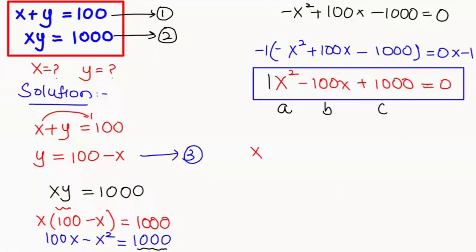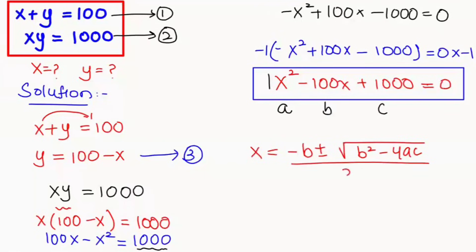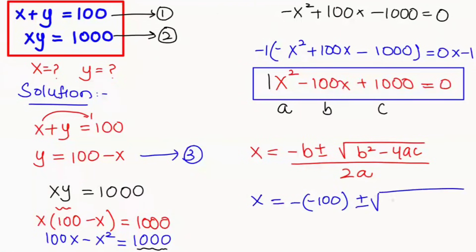x is equal to minus b plus or minus root of b squared minus 4ac, over 2a. So the b value we have here is negative 100, giving us: x equals negative of negative 100, plus or minus the square root of negative 100 to the power of 2.